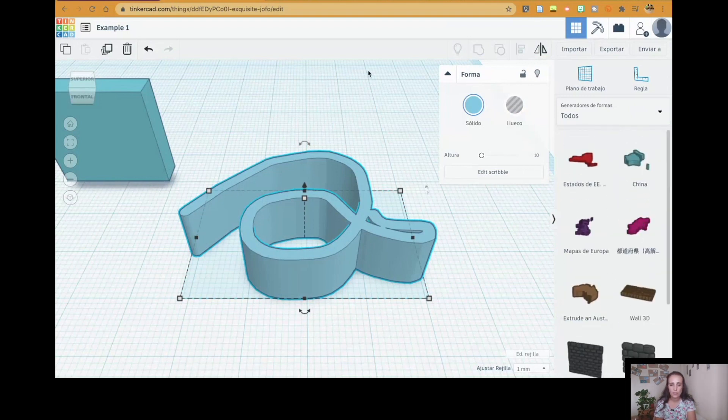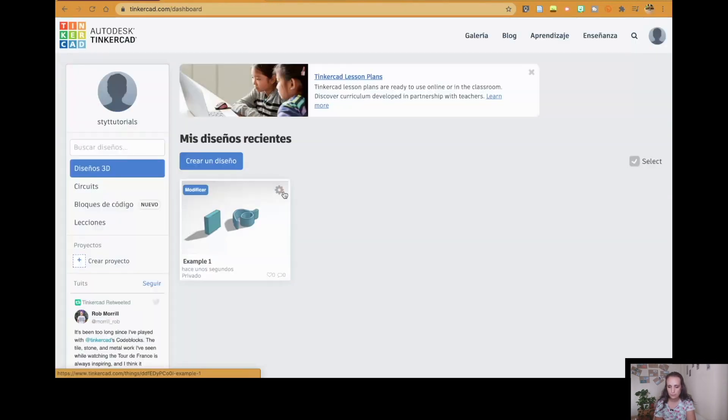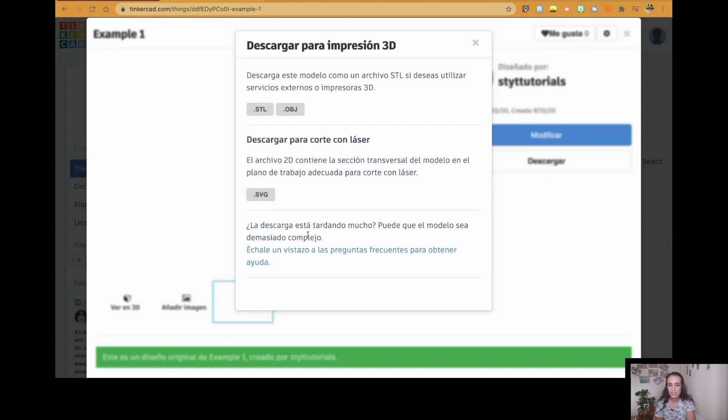Imagine that you've finished with your design. Usually it saves by itself. But I usually come back to the dashboard. This way I make sure that it is going to be saved. Now we can come back. And we can download it. And to download it, we are going to use the STL extension. Because this is the one that we are going to use for our slicer.